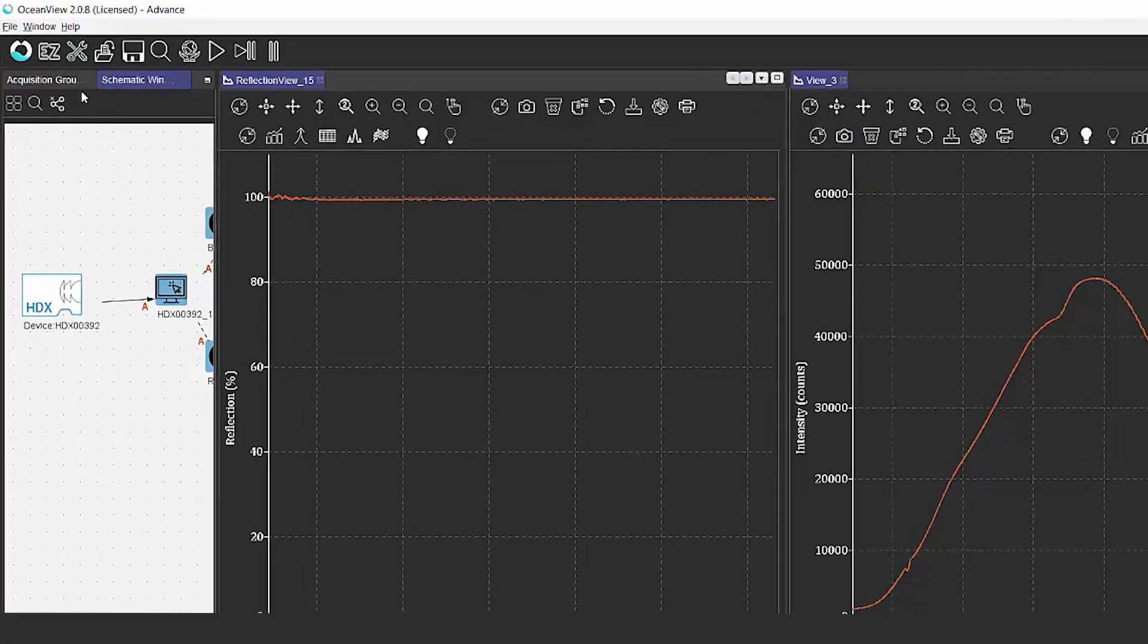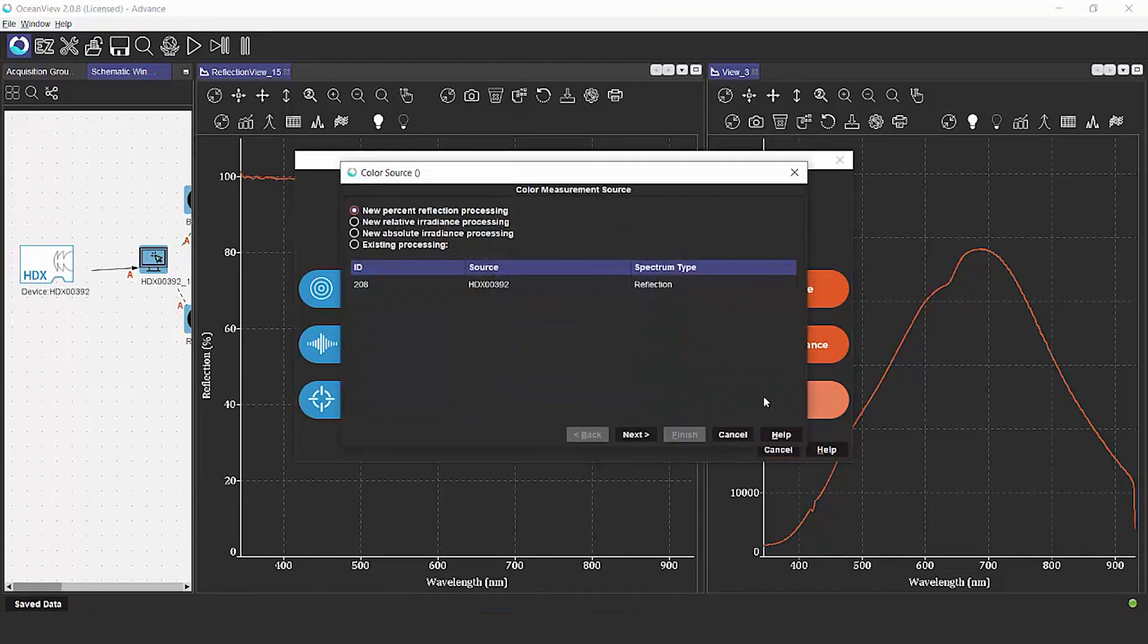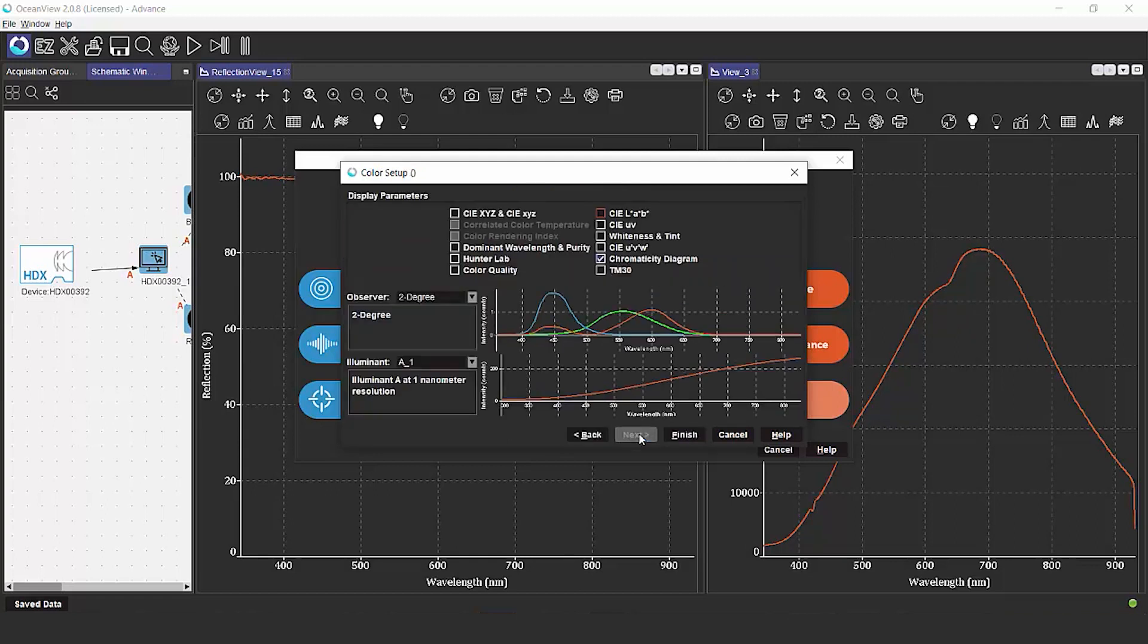We're going to open up the wizards by clicking here, and this time we're going to pick the color option. Since we've already got an outstanding reflection measurement going, we're going to go ahead and use existing processing.